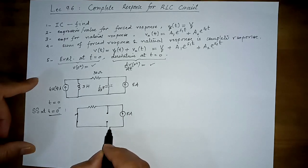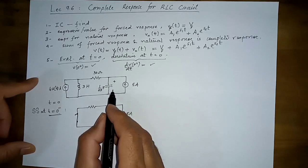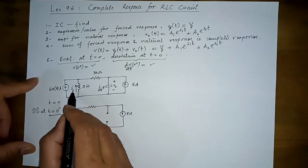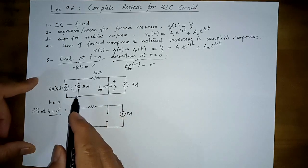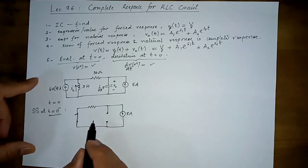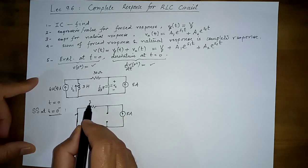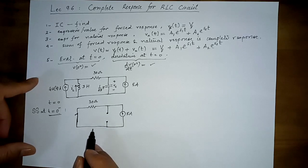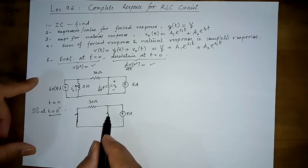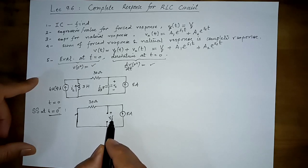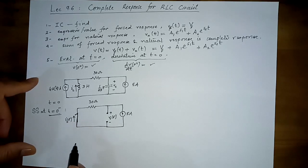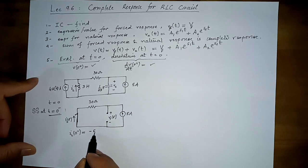At t = 0⁻, with only the 5-ampere source present, the capacitor is open and the inductor is shorted. We are usually interested in finding the voltage across the capacitor and the current through the inductor. Taking our polarity and direction conventions, what would be VC(0⁻) and IL(0⁻)?